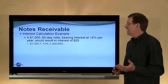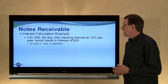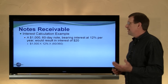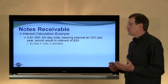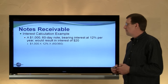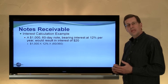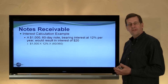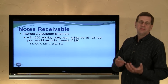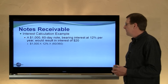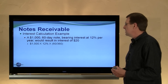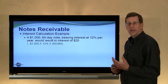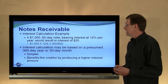To look at an example, assume a $1,000 60-day note bearing interest at 12%. The interest for that 60-day period would be $20. That's $1,000 principal times 12% rate, times — using a 360-day year assumption — times 60 days outstanding divided by 360 days. So the product of that multiplication is $20, the amount of interest.